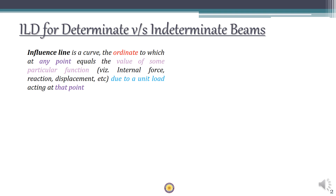From the ILD you can find the position of the load which causes a maximum value of that function, so it is useful for analyzing structures subjected to moving loads. The formal definition states: an influence line is a curve whose ordinate at any point equals the value of the function due to a unit load acting at that point.